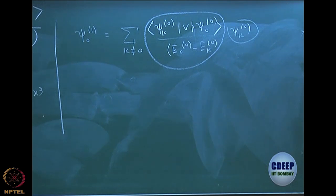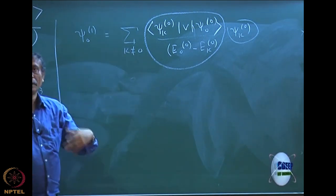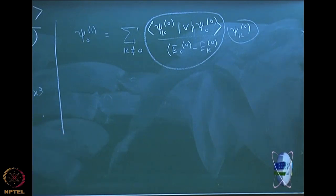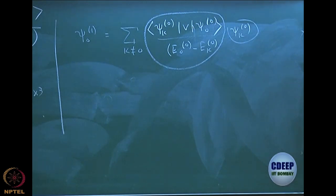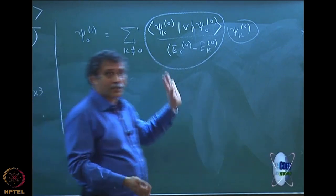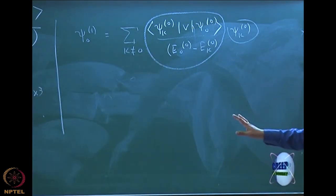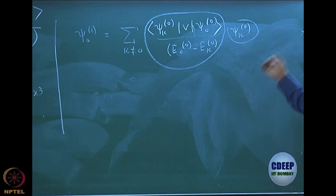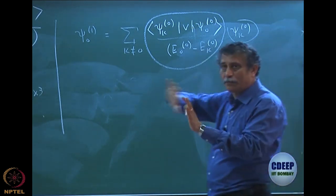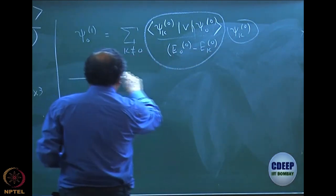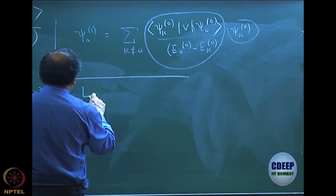Basically, the whole purpose is to construct the first order perturbation correction to the wave function as a linear combination of what is already known — the eigenstates of H0. I discover that the combination coefficient for each k can be written in this form. Then I know everything about ψ01. Of course it is a long expression as a linear combination, but in principle I can calculate. This summation over k is limited by my knowledge of eigenstates of H0.